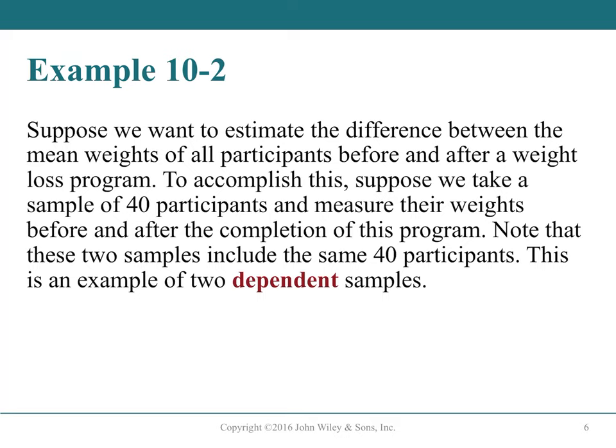Dependent samples occur when the same individuals appear in both samples—for example, measuring weights of 40 participants before and after a weight-loss program. The same 40 people are measured twice, making the two samples dependent. Twins, engaged couples, or family members can also constitute dependent samples.